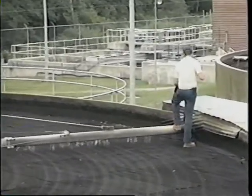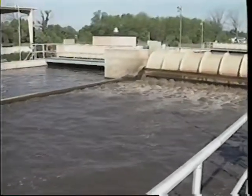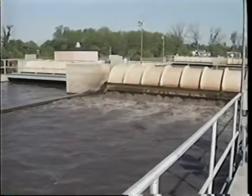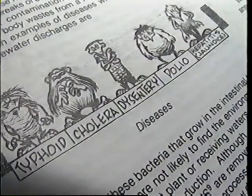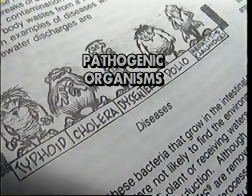Most bacteria found in wastewater are not harmful and die off during the mechanical and biological stages of treatment. However, bacteria originating from communicable human diseases and viruses can remain in sufficient numbers and potentially cause widespread illness. These bacteria are called pathogenic organisms, and their elimination is achieved with the disinfection processes.